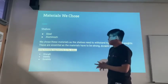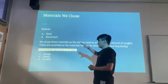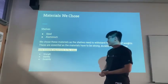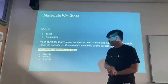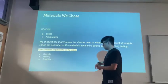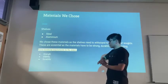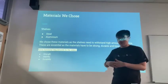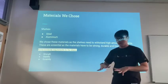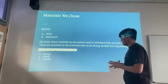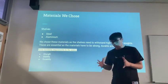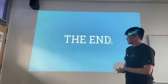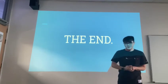For the shelves, we have chosen two materials: steel and aluminium. Some of the functional requirements for the shelves are strength, stability, and durability. We chose these materials so that the shelf can withstand high amounts of weight without collapsing while we grow many types of vegetables, and so that there will not be any accidents within the Sky Farm. And yes, we have come to the end of our presentation. Thank you for your time.